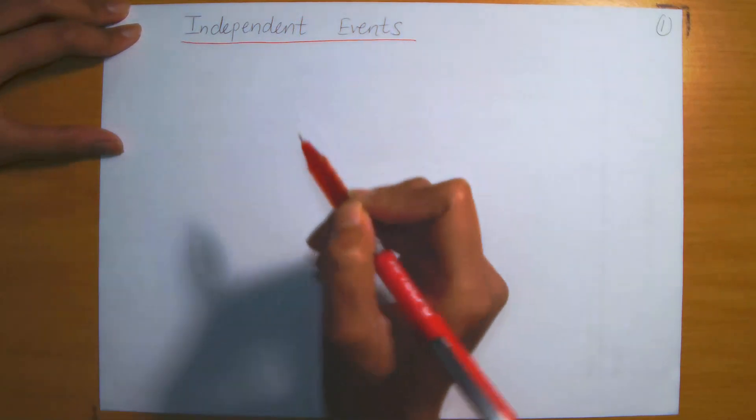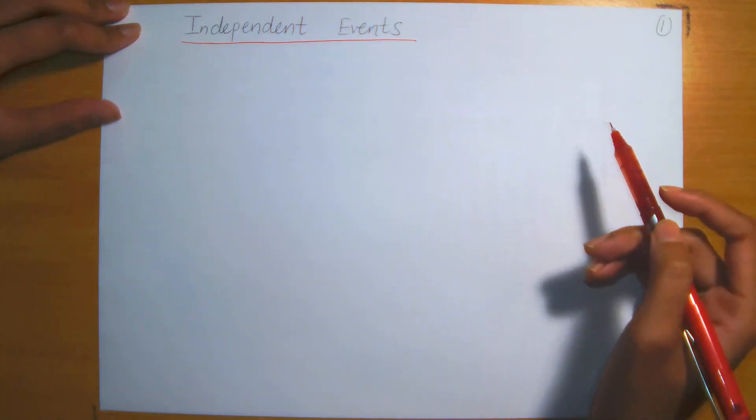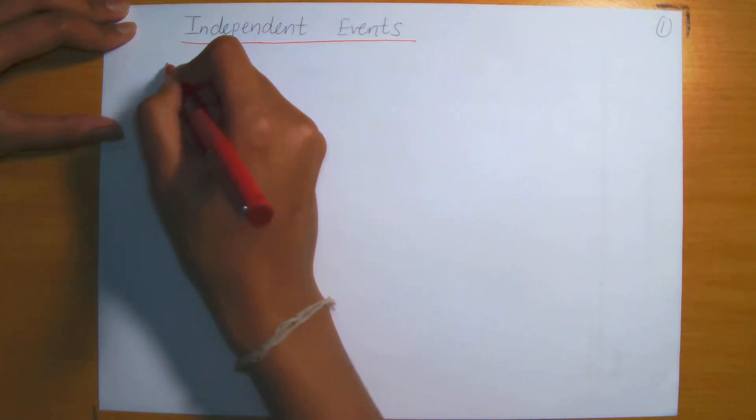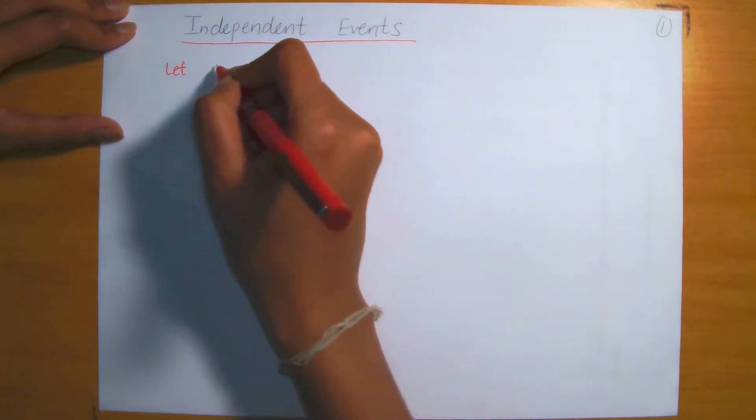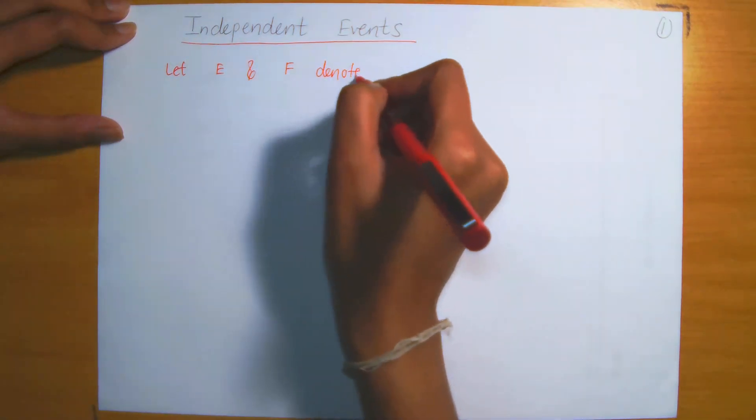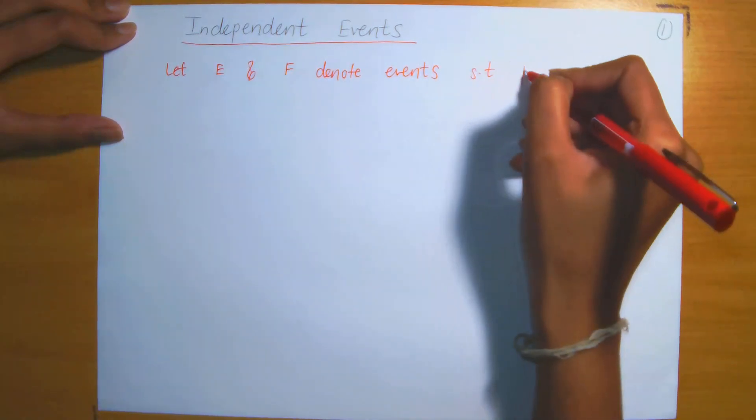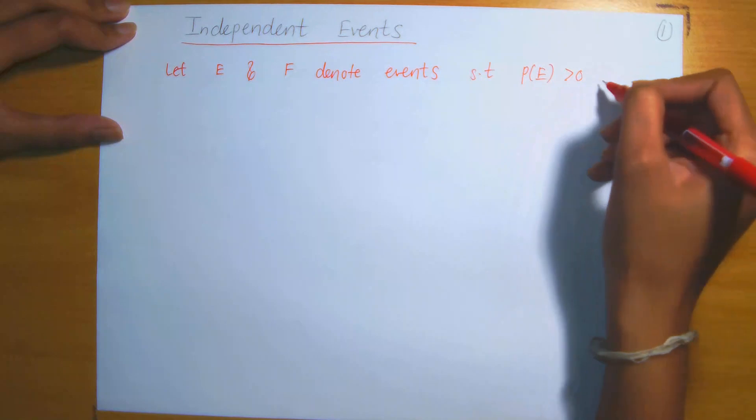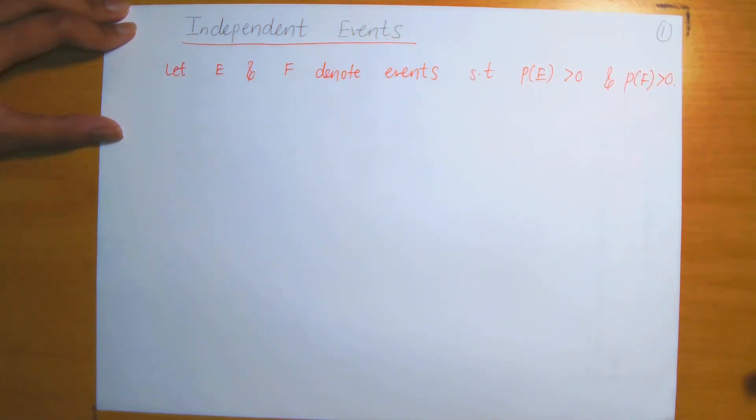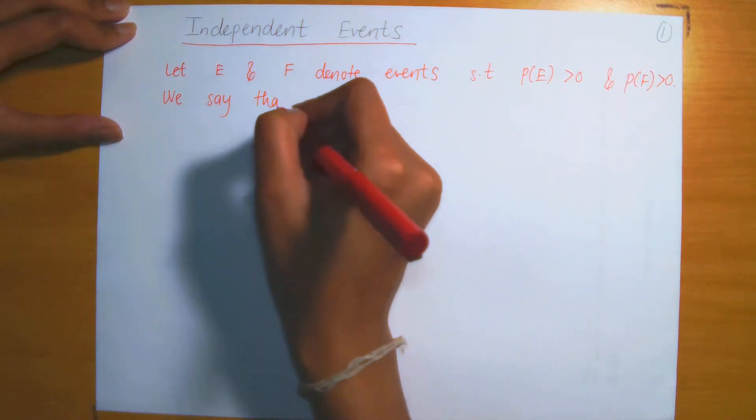We say that two events are independent if the probability of one event occurring does not affect the probability of the other occurring. Let E and F denote events such that the probability of E is greater than zero and the probability of F is also greater than zero.